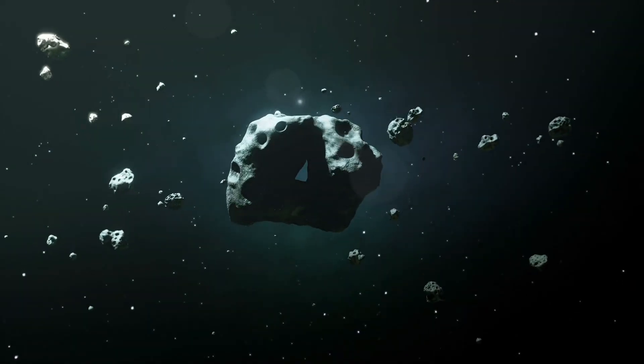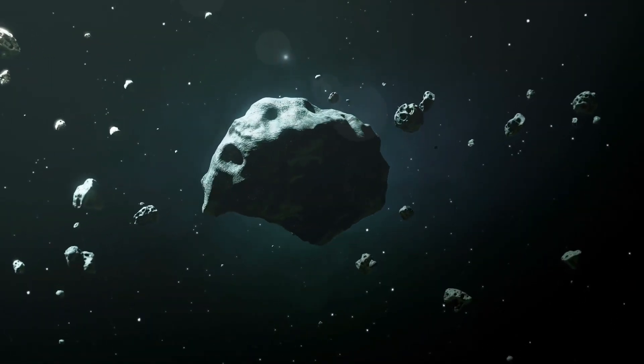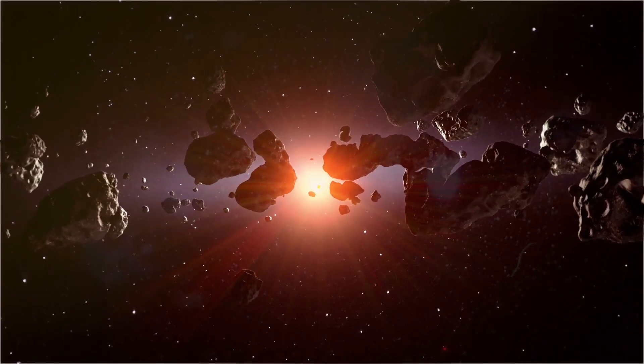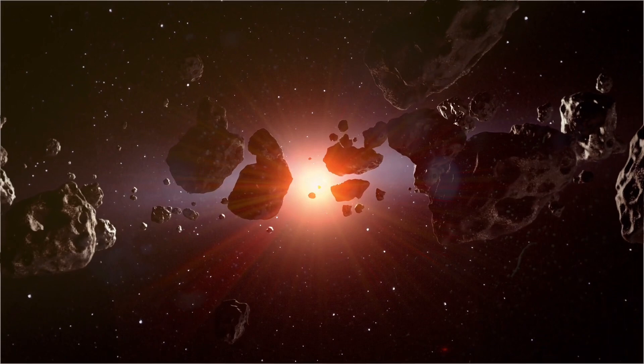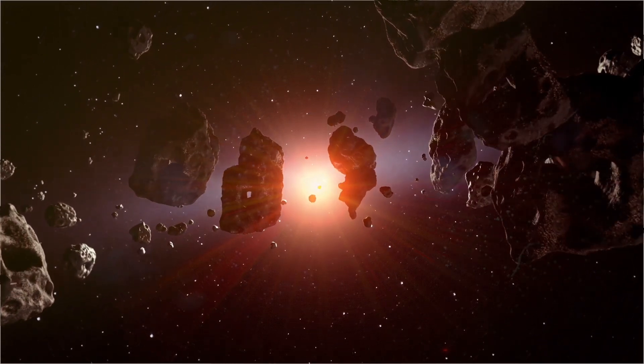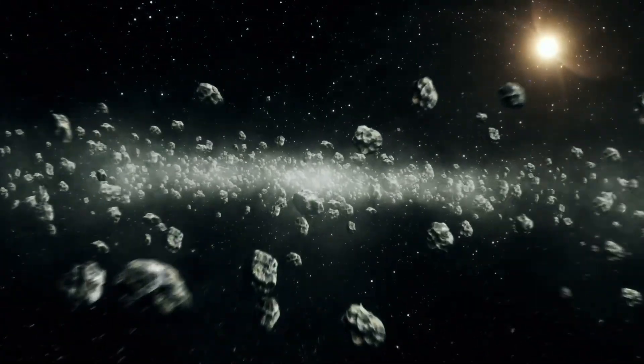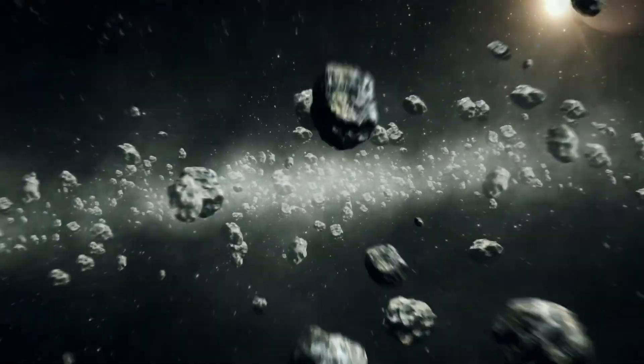Asteroids are rocky objects that orbit the sun. They are smaller than planets and can vary in size from small boulders to objects several hundred kilometers in diameter. Most asteroids are found in the asteroid belt, located between Mars and Jupiter.